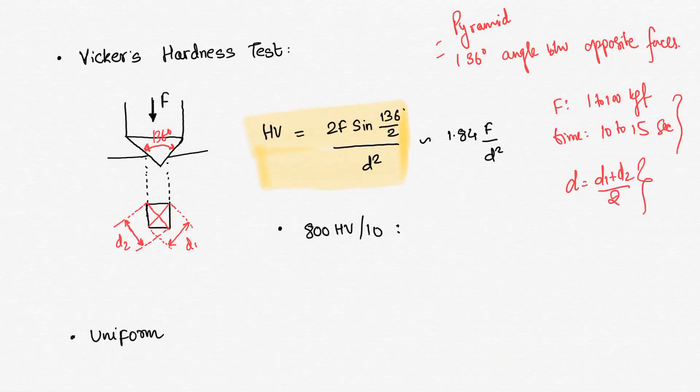Now the denotation will usually be like 800 HV/10. The material will be having 800 Vickers hardness, and that was calculated using a load of 10 kg force. When we had the hardness calculated, that came out to be 800 Vickers hardness.